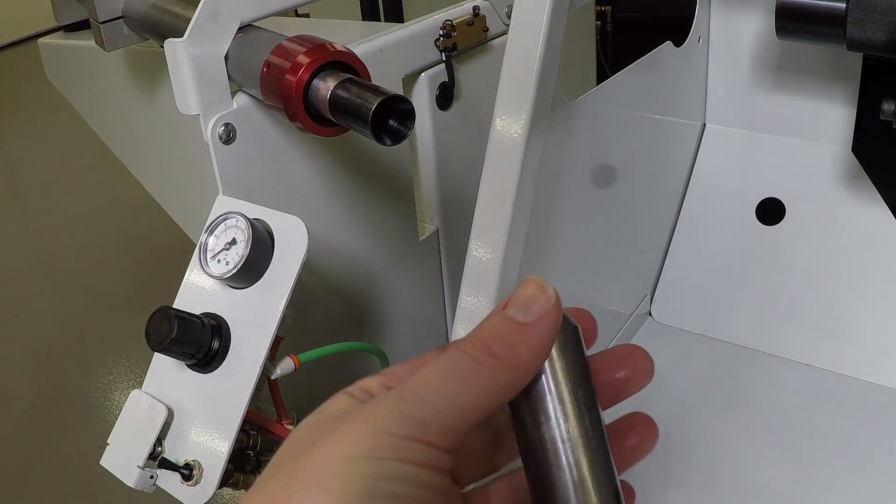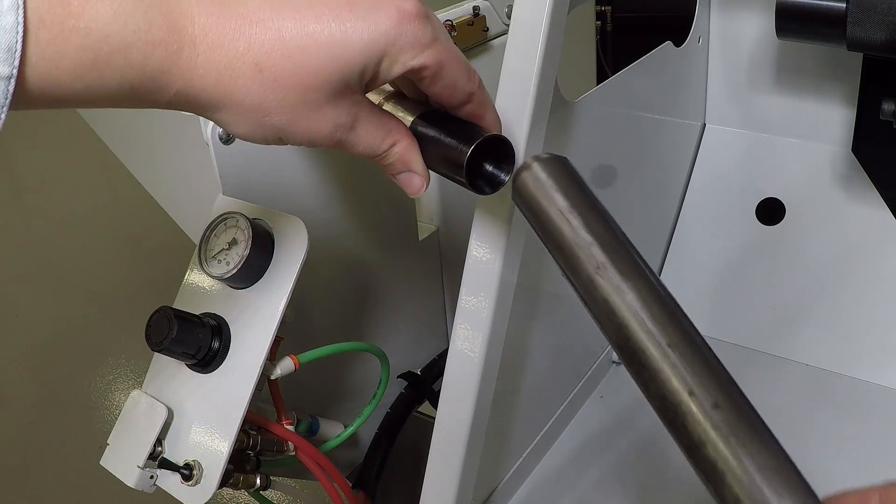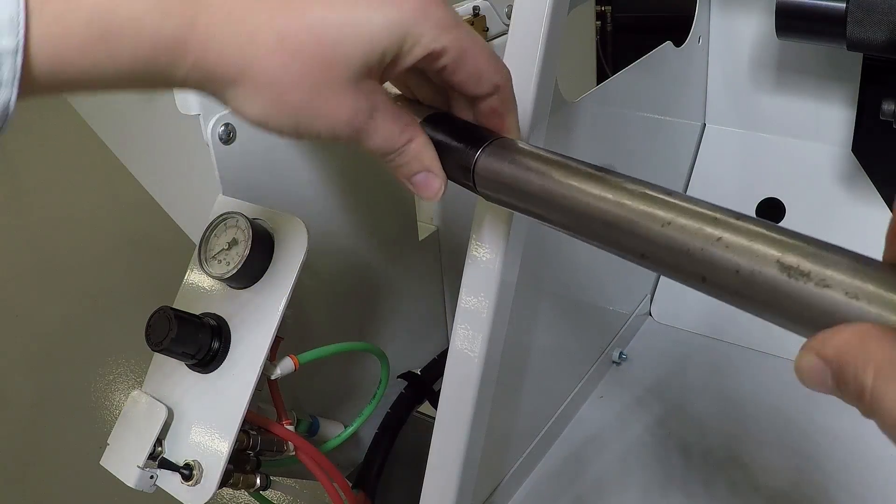Placing a 60 degree chamfer on your bar stock will help keep it centered and is absolutely necessary if the bar stock diameter is larger than the live center.